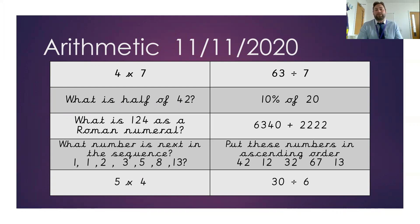Next one is 5 times 4. We have 63 divided by 7. What is 10% of 20? The next question is 6,340 plus 2,222. Then put all these numbers in ascending order: 42, 12, 32, 67, and 13. And then lastly, what is 30 divided by 6?